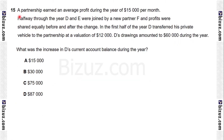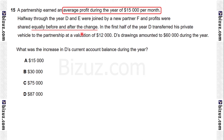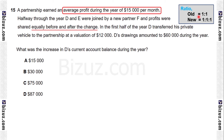Question 15. A partnership earned an average profit of $15,000 per month. Halfway through the year, D and E were joined by new partner F, with profits shared equally before and after. D and E were partners in the first half; D, E, and F in the second half. The ratio for the old partnership is 1:1, and for the new partnership 1:1:1.